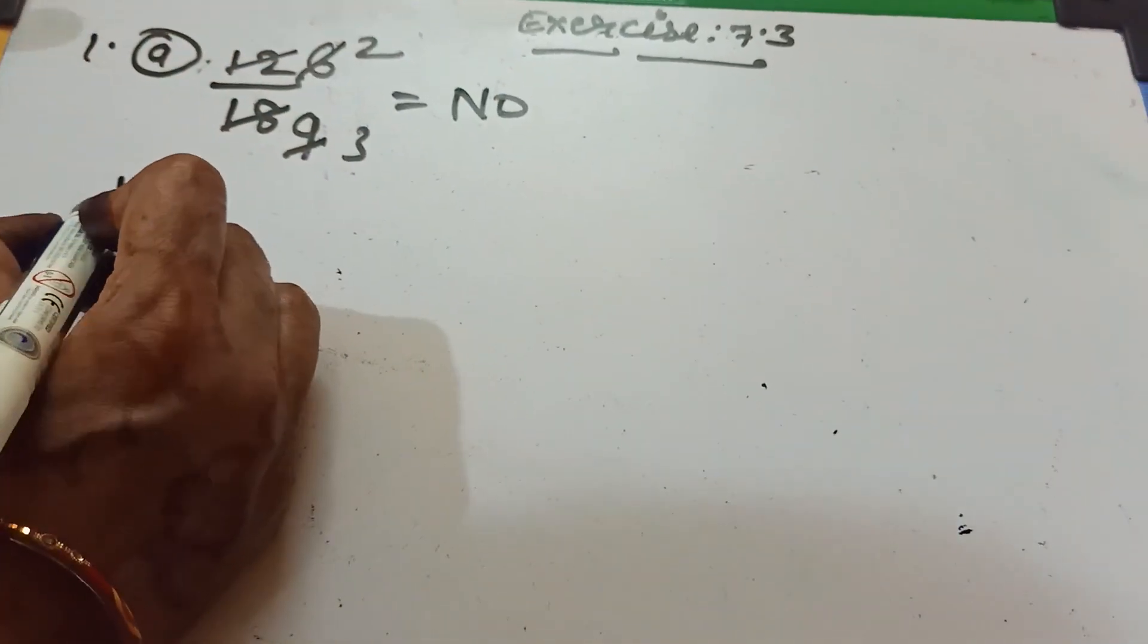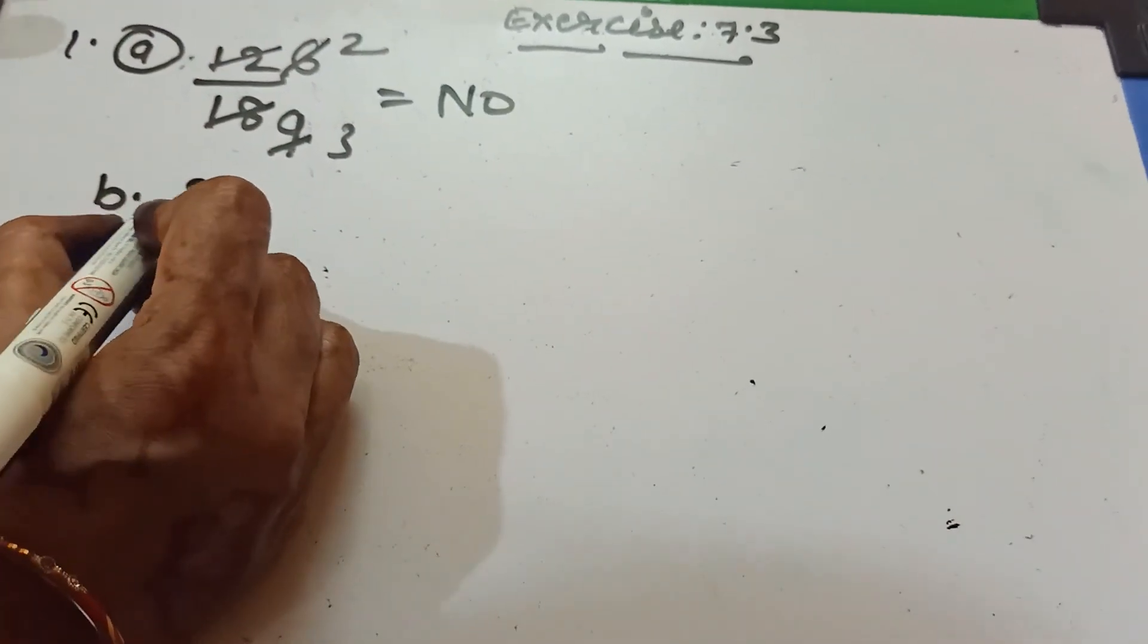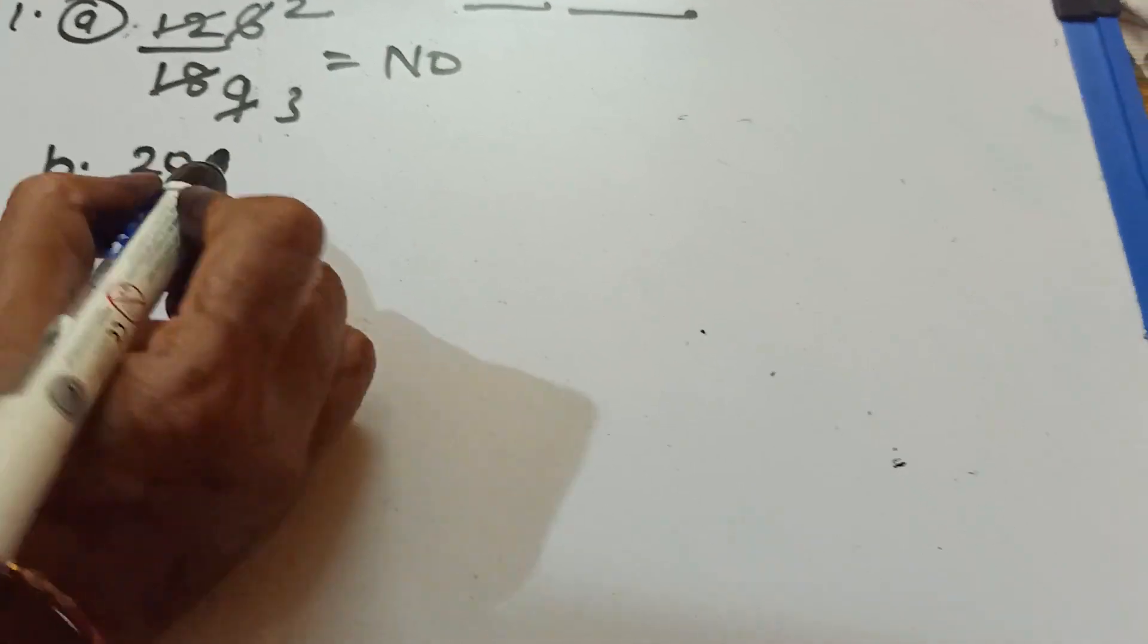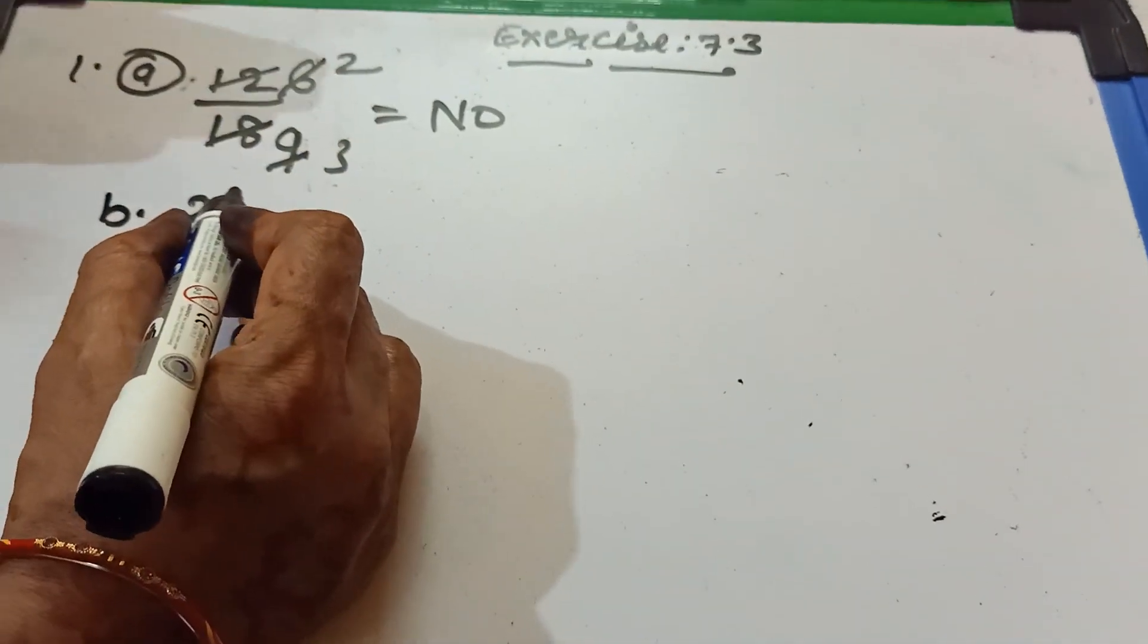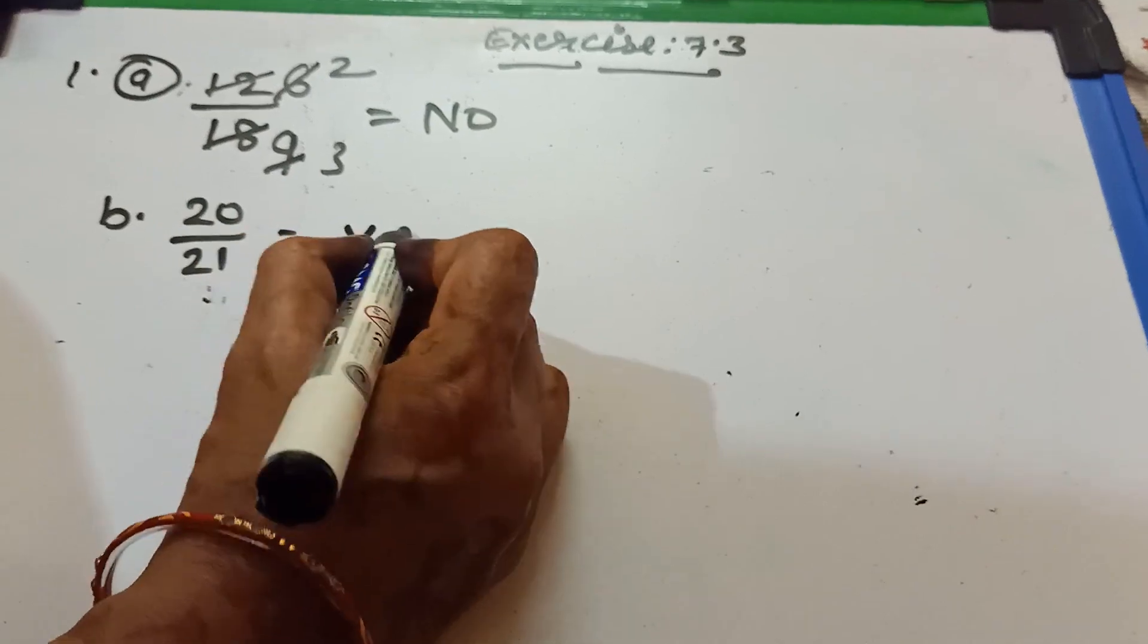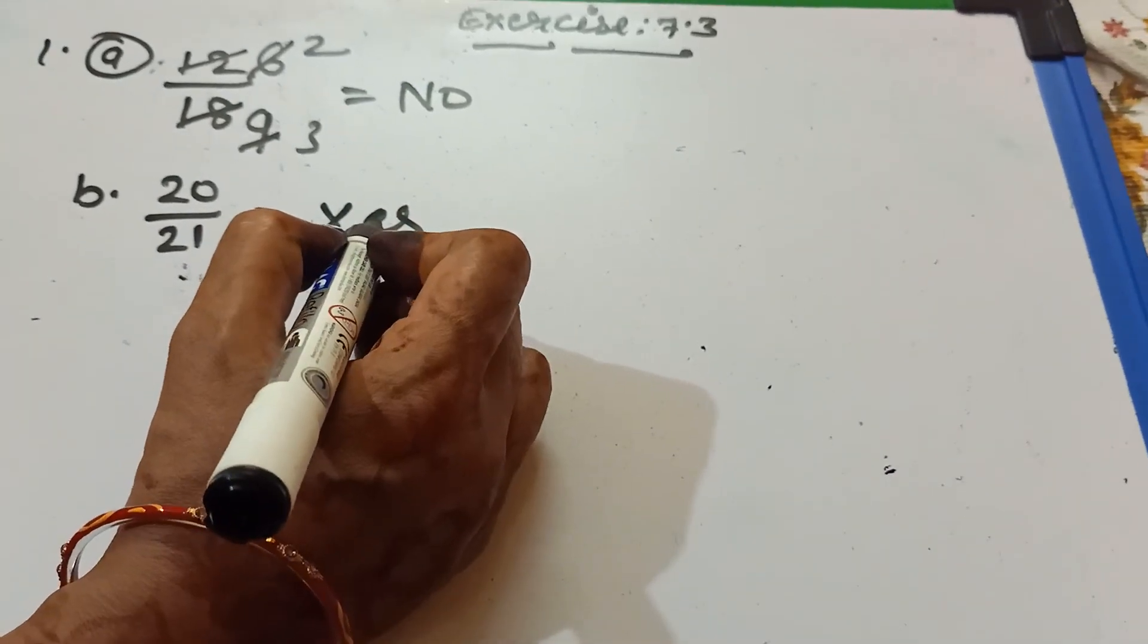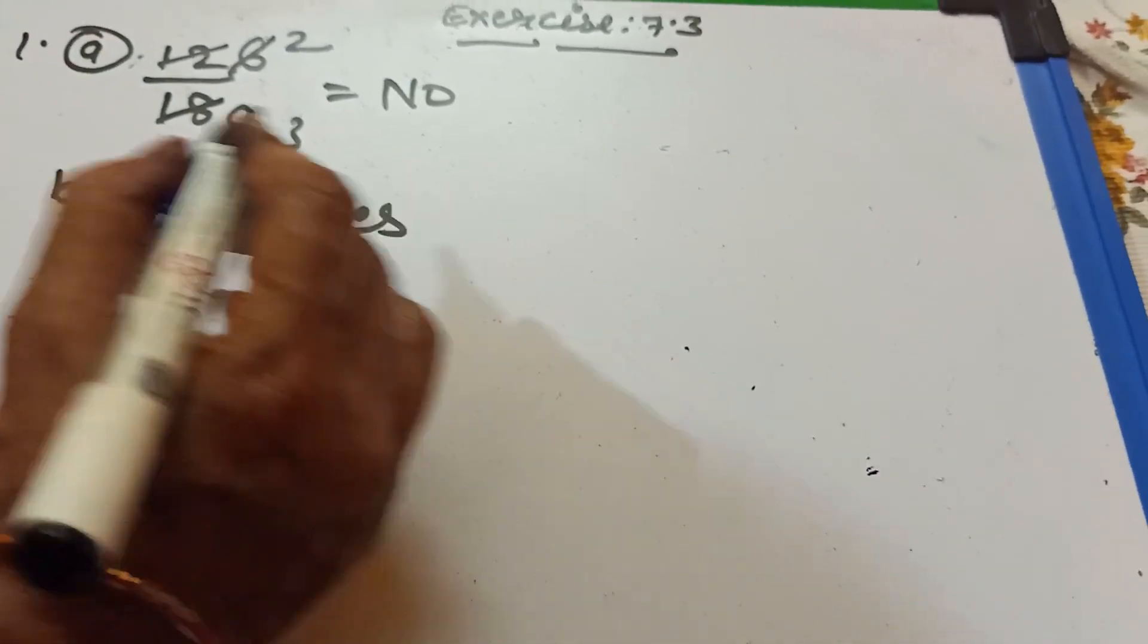Again we take question number B. It is 20 by 21. There is no number to divide the both numbers. Yes, it is in their lowest term.